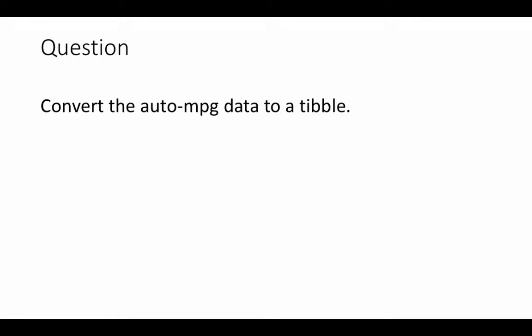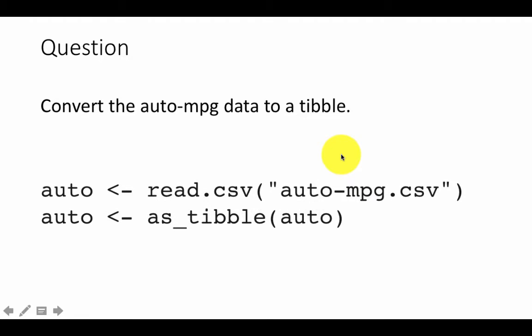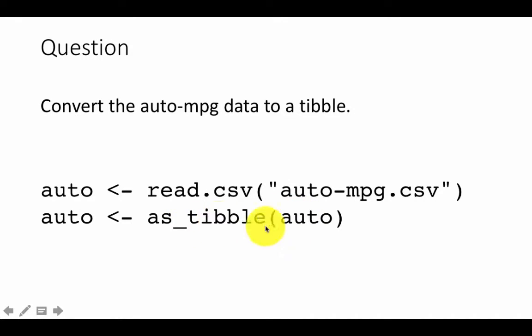Now let's work with the auto MPG data frame. When you read it with read.csv you get a data frame, but we want to convert it into a tibble because a tibble is a little more user-friendly. First we read it from a CSV file as before, then you can convert it using as_tibble(auto) — there is a function called as_tibble that takes a data frame and returns a tibble.